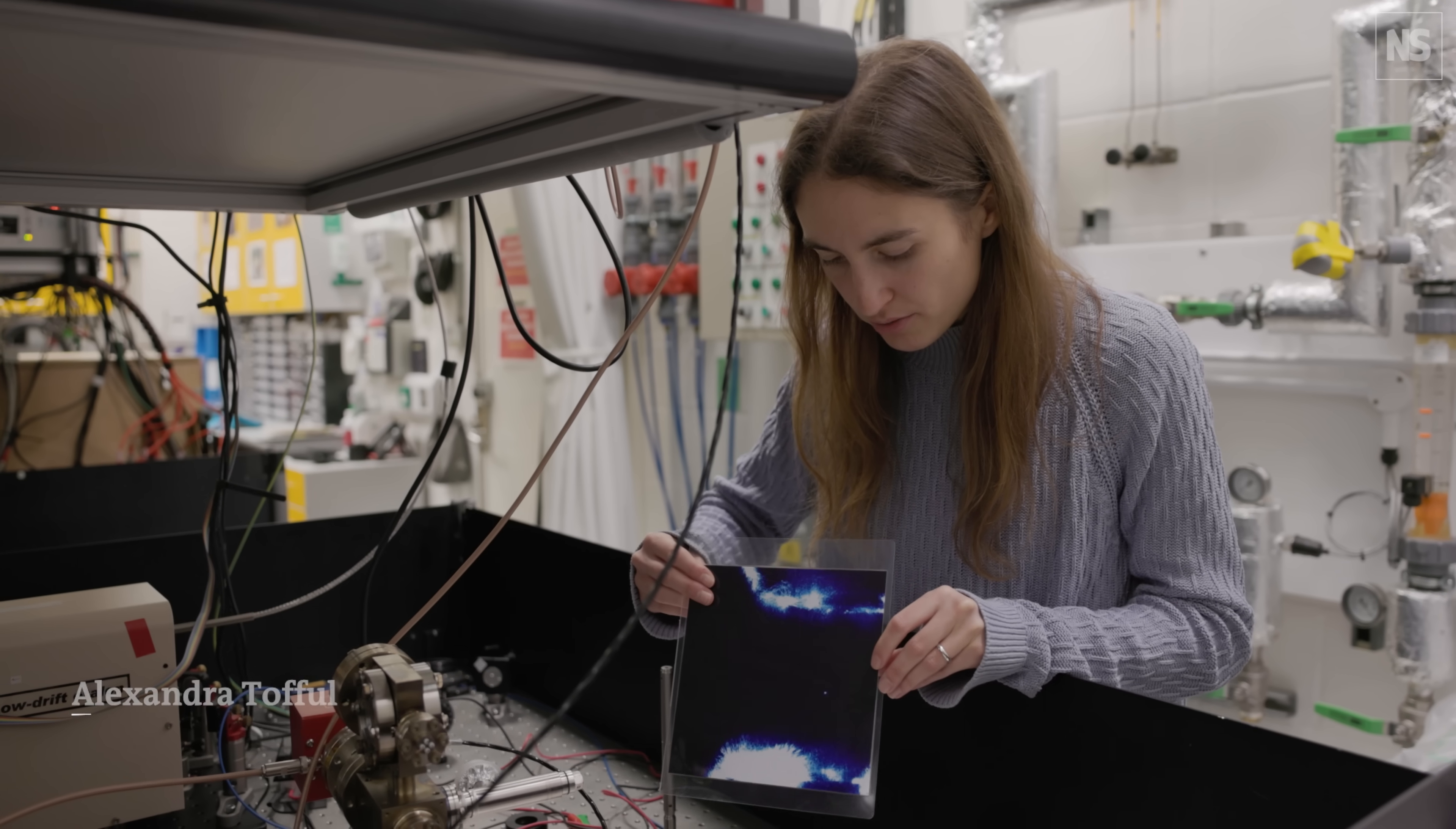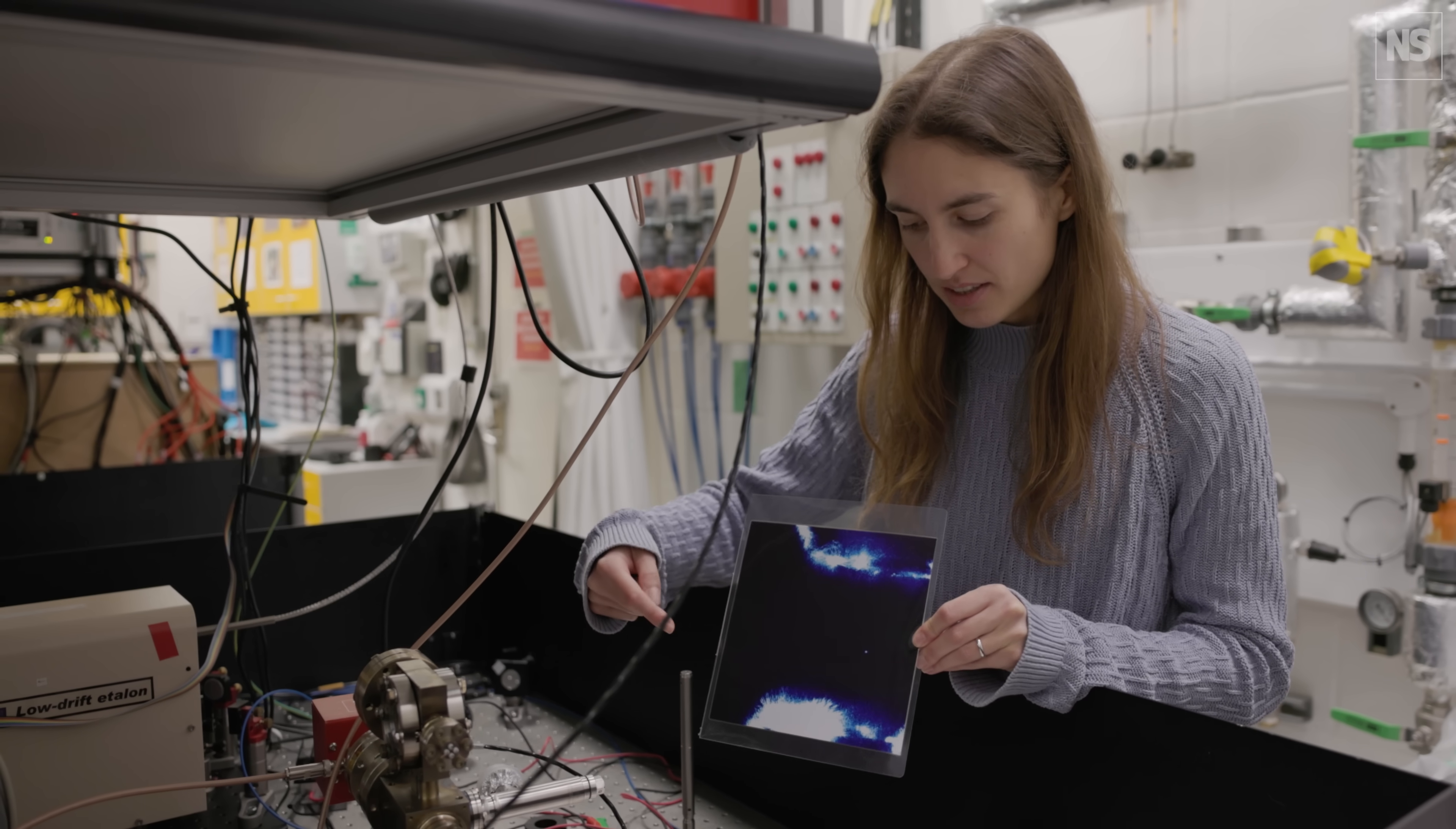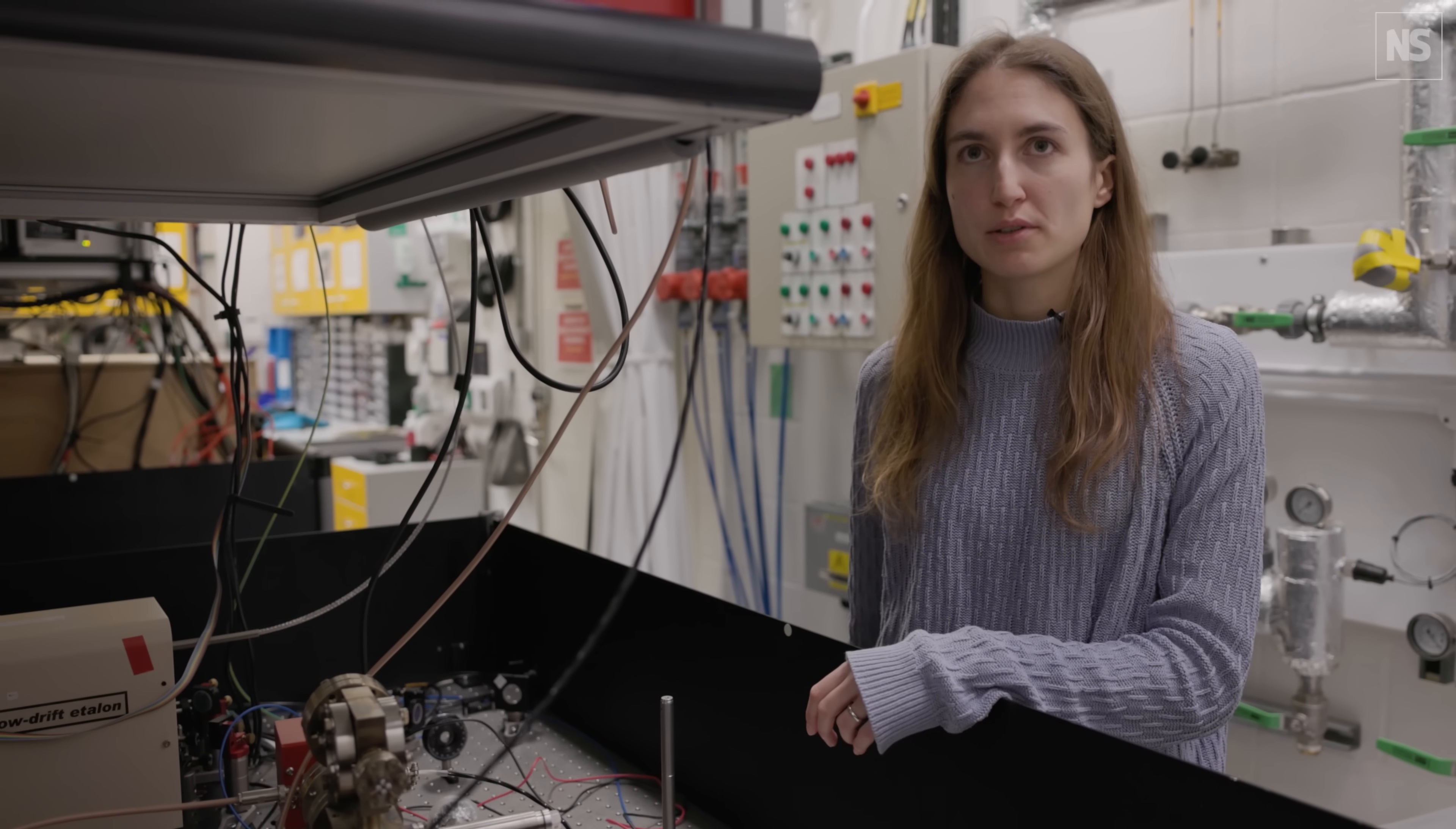This is an image of the ion fluorescing in between the two conical electrodes. The light here is the scattering from the cooling laser. The ion itself is the very basis of the optical clock.